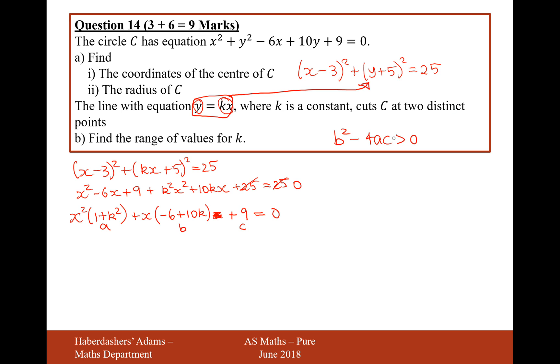For when it cuts two distinct points, we want b squared minus 4ac to be greater than 0. Therefore, it's going to be the square of the b term minus 4 times a times c, and that will be greater than 0. Now we need to expand this and solve this. It's going to be plus 36 because it will be the negative 6 squared minus 120k plus 100k squared minus 36 from the 4 and the 9 times 1, minus 36k squared. That's going to be greater than or equal to 0.